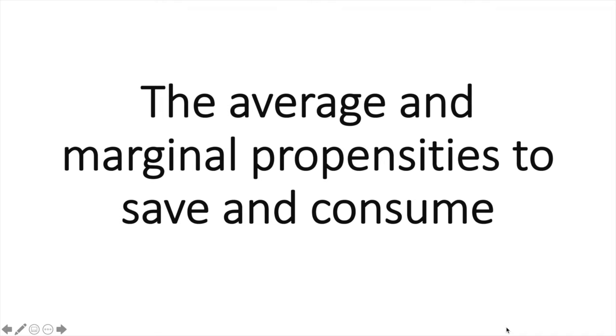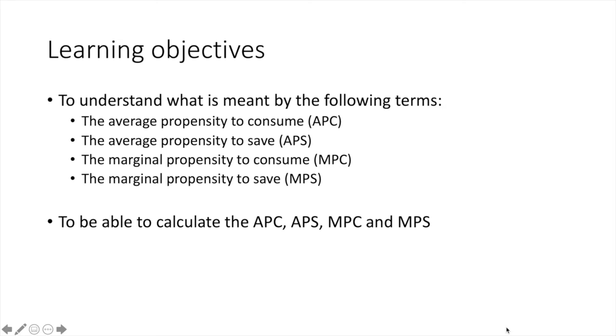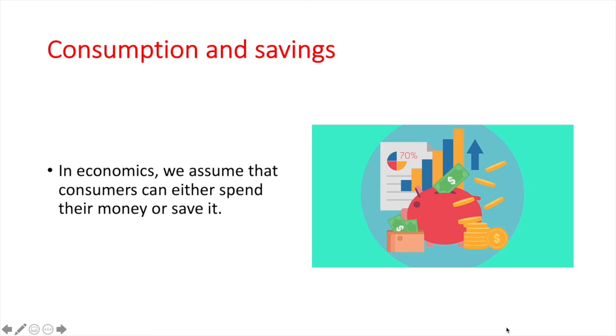In this video we'll learn about four terms and their corresponding calculations. These include the average and marginal propensities to consume and save.